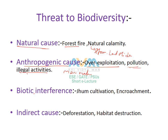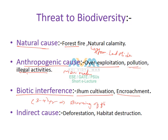The third threat is biotic interference, including encroachment and shifting cultivation. In this traditional agricultural practice, farmers cultivate a particular field for a few years and then burn the entire agricultural field and move on to another field, resulting in a huge loss of biodiversity.